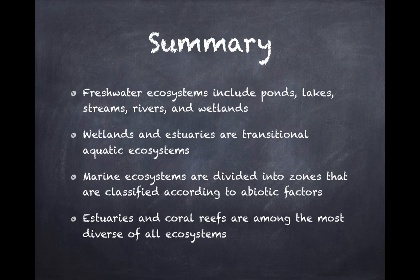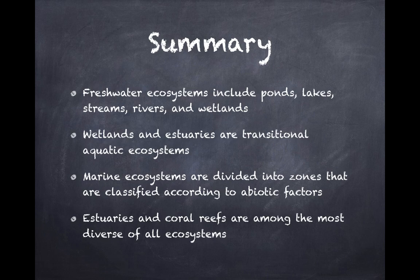In summary, freshwater and marine ecosystems have the same requirements as terrestrial ecosystems — they are based on the number of producers available, and for the most part those producers are photosynthetic and rely on sunlight. Freshwater ecosystems include ponds, lakes, streams, rivers, and wetlands. Wetlands and estuaries are transitional aquatic ecosystems — wetlands are only wet some of the time, and estuaries are in between salty and fresh water.